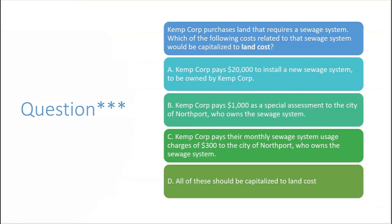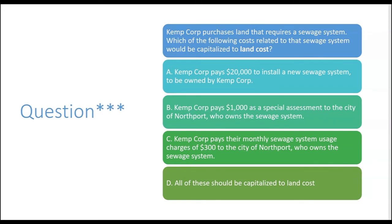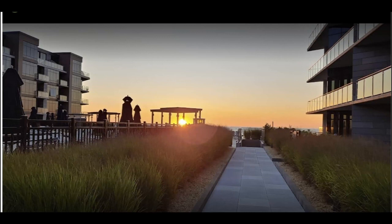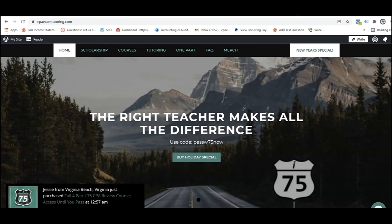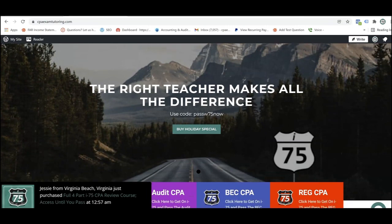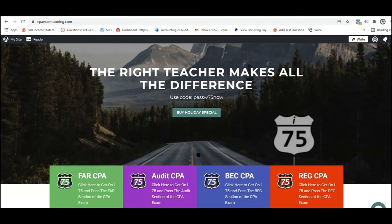Kempcorp purchases land that requires a sewage system. Which of the following costs related to that sewage system would be capitalized to land cost — not land improvement, but land cost? If you think you know, leave the answer in the comments section. If you find these videos helpful and want to request more, don't forget to like and subscribe — it really helps the channel out. And if you need more help with the CPA FAR Exam, go to CPAExamTutoring.com and get yourself on I-75 with me, Darius Clark — where the right teacher makes all the difference.